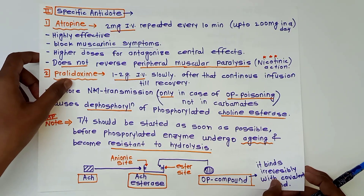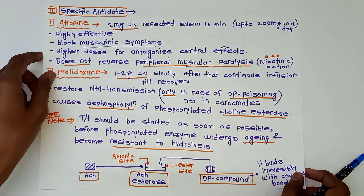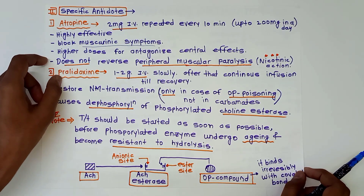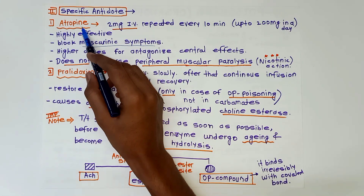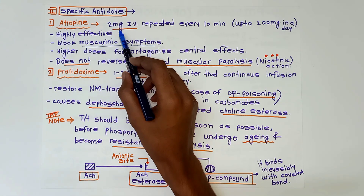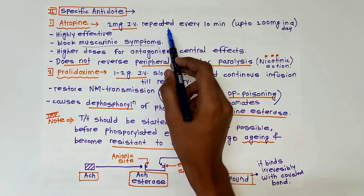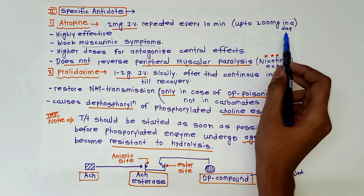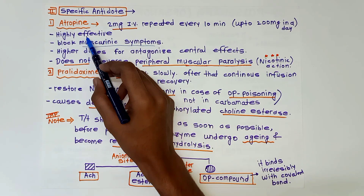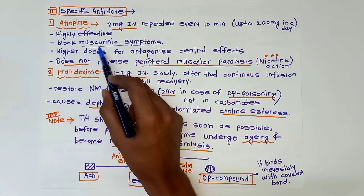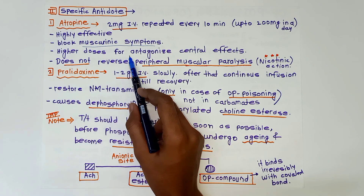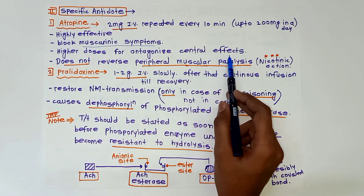For specific antidotes, there are two major drugs. First is atropine — it is the drug of choice. The dose is 2 mg intravenous, repeated every 10 minutes up to 200 mg per day. It is highly effective as it blocks muscarinic symptoms, and higher doses are required to antagonize the central effects.